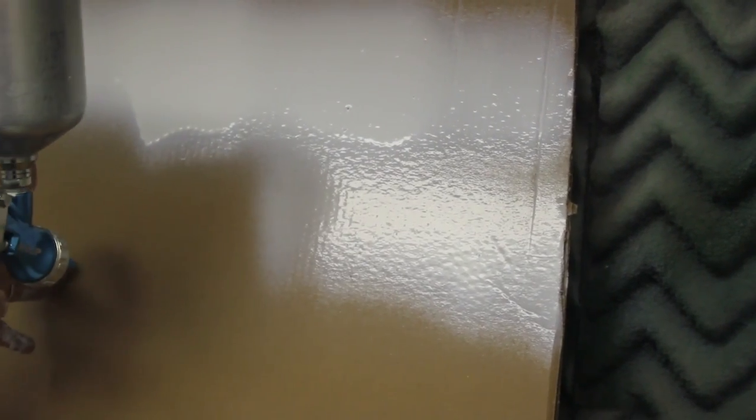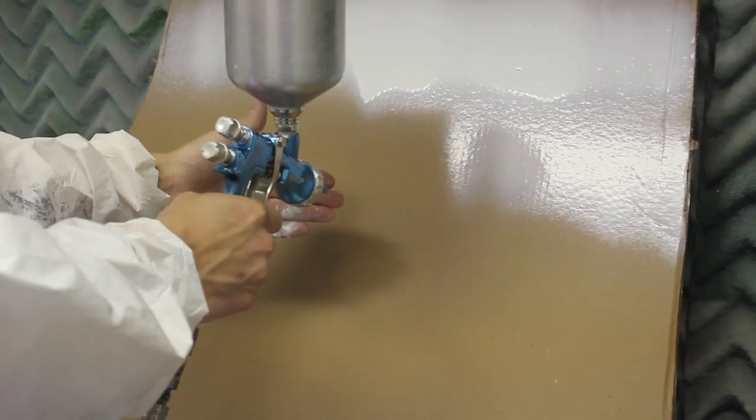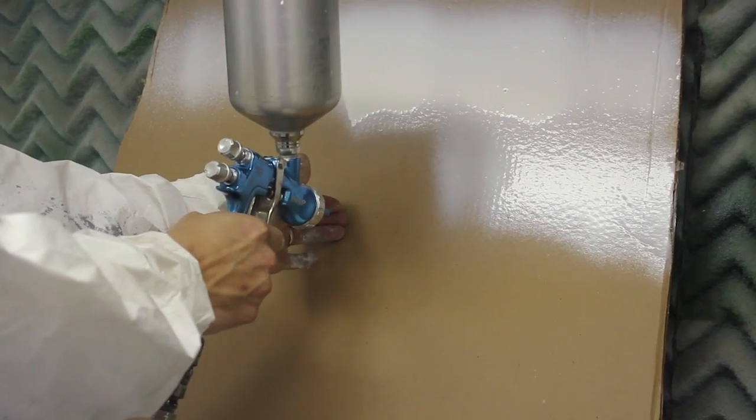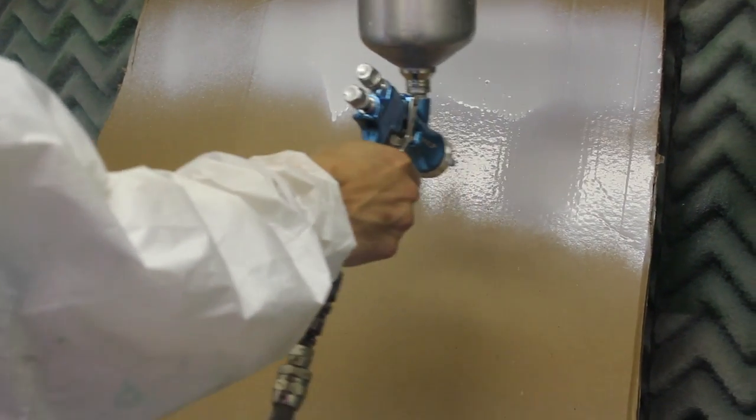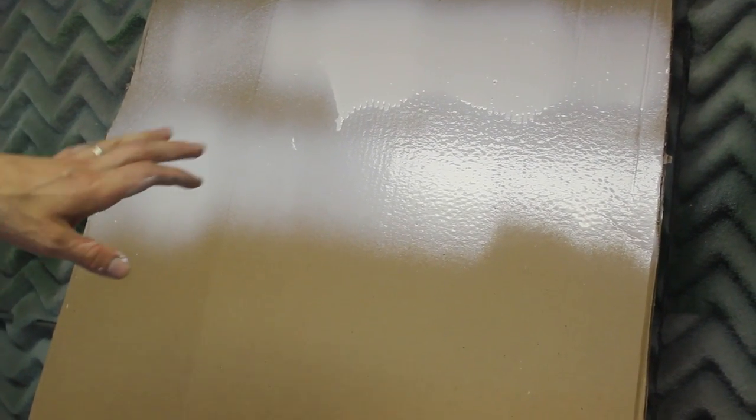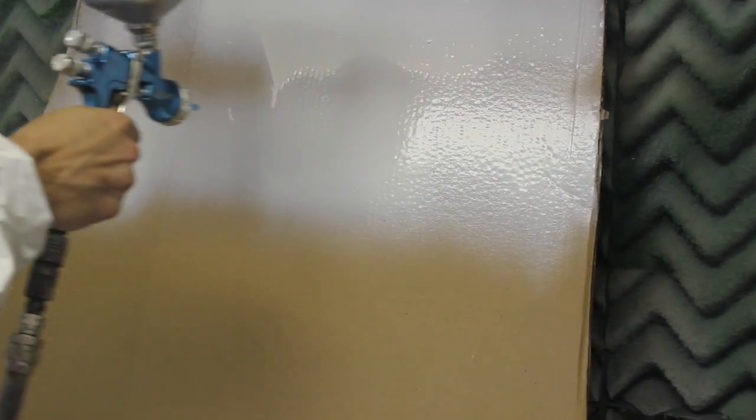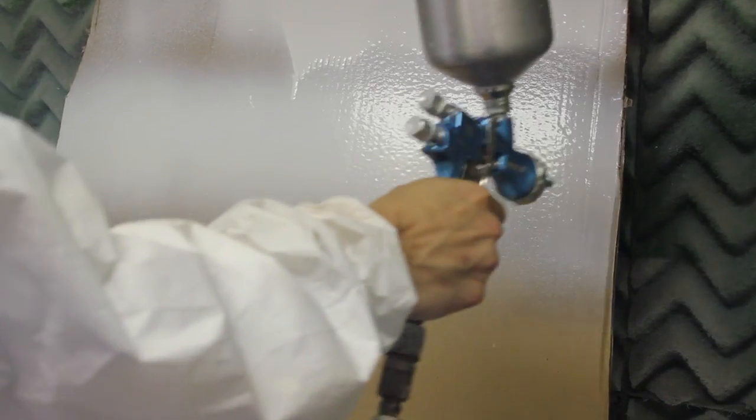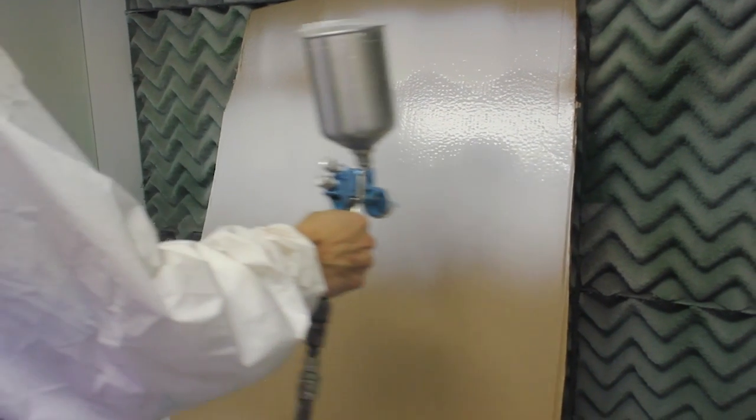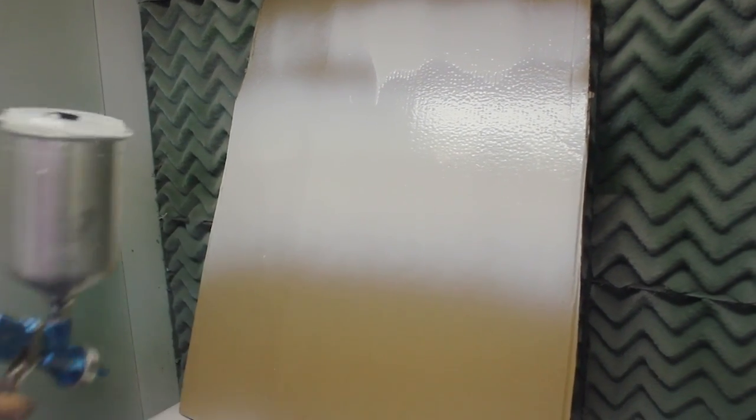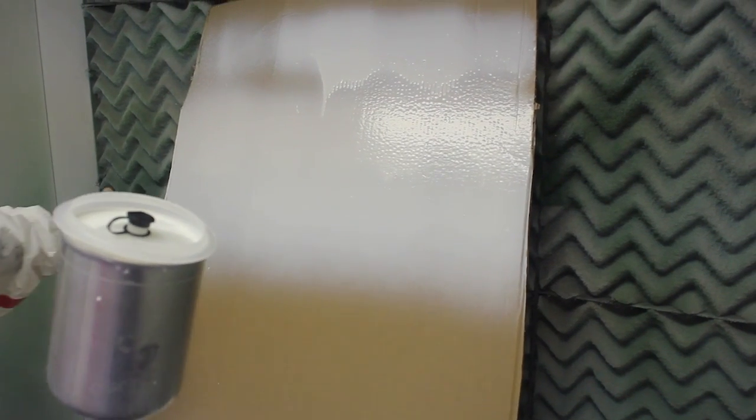When you use the gun, a couple of key things. You want to remain perpendicular to the surface and you want to be six to eight inches away from that surface. So roughly about a hand's length. You want to move back and forth evenly and at a relatively consistent pace. If you don't do that, you'll obviously get differences in how much paint you're applying.